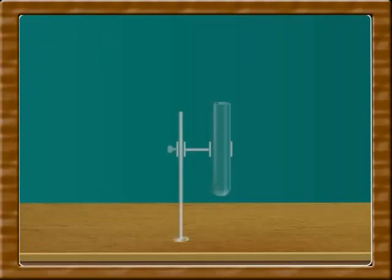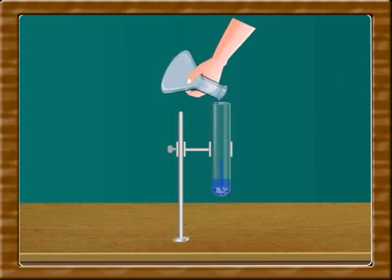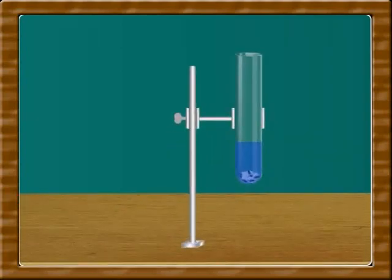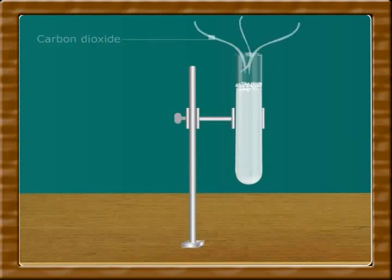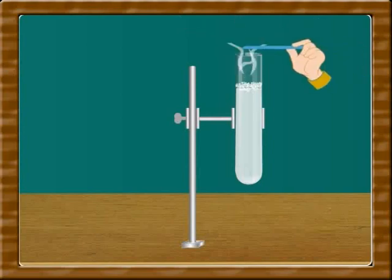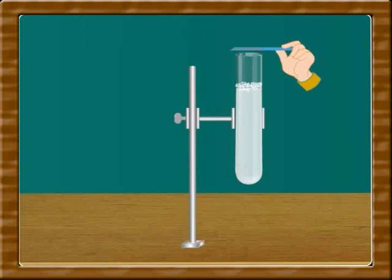Let us look at some more examples of chemical reactions. Take marble chips in a test tube and add some hydrochloric acid. You will notice a brisk effervescence — this is due to the liberation of carbon dioxide. This reaction is also an example of a fast reaction. Hold the moistened blue litmus paper near the mouth of the test tube; you will notice that it changes to red, confirming the evolution of an acidic gas which is carbon dioxide.